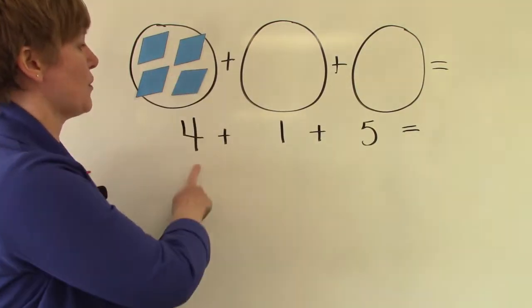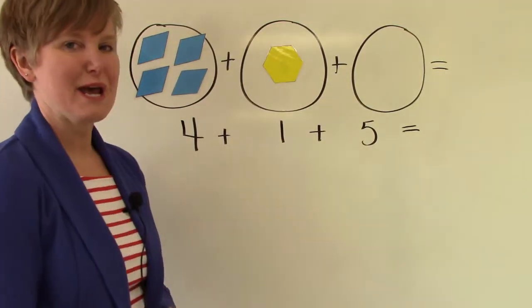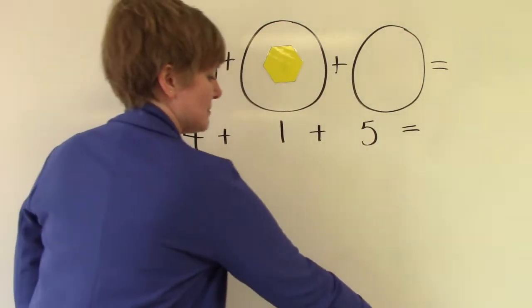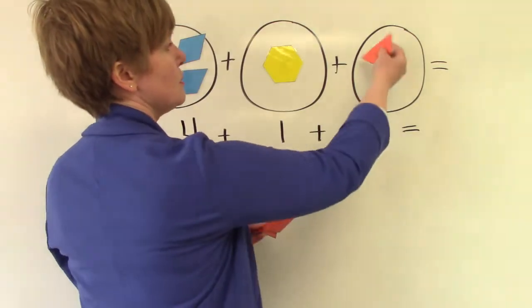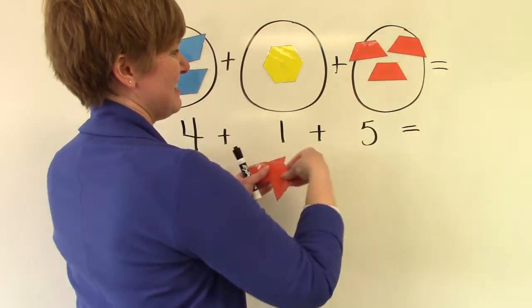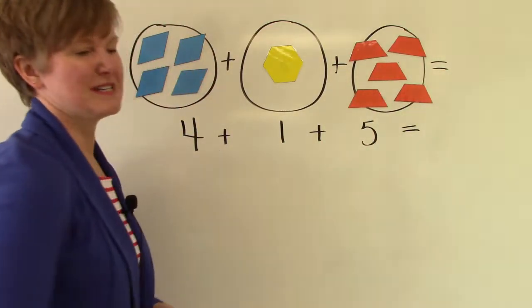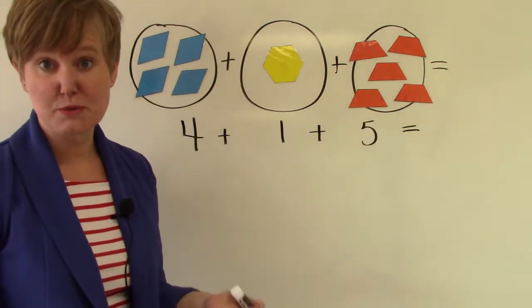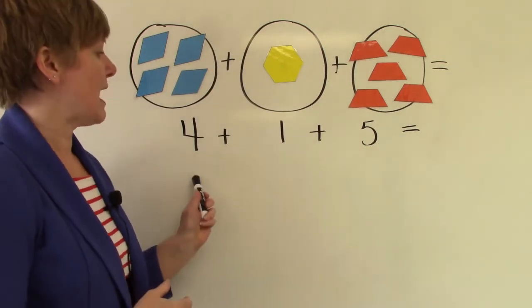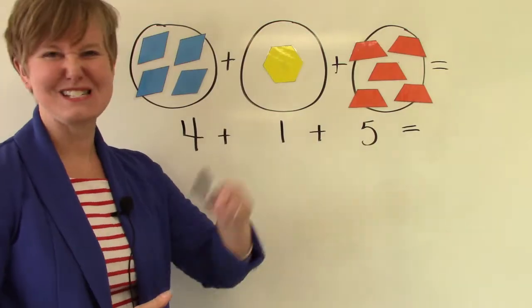But I have one, two, three, four of them and I'm going to add it to one hexagon and I'm going to add that to one, two, three, four, five trapezoids and we'll see how many shapes we have all together. If we add four plus one plus five together.